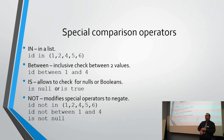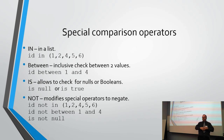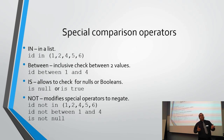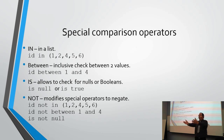NOT is a modifier that negates the operators above. NOT IN means give me everything but what's in that list. NOT BETWEEN 1 AND 4 gives you everything less than 1 and everything greater than 4 — not just 2 and 3. IS NOT NULL checks whether a value has ever been set in that field — has there ever been a value pushed into this field? Yes — IS NOT NULL.